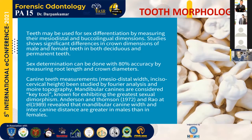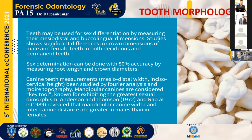The mesiodistal width and incisor cervical height of mandibular canines can be used, as these are greater in males than females. In females it is approximately 6 millimeters, and in males it ranges from 6.5 to a maximum of 7 to 7.5 millimeters. So mandibular canines can be used as a key tool for sex determination.